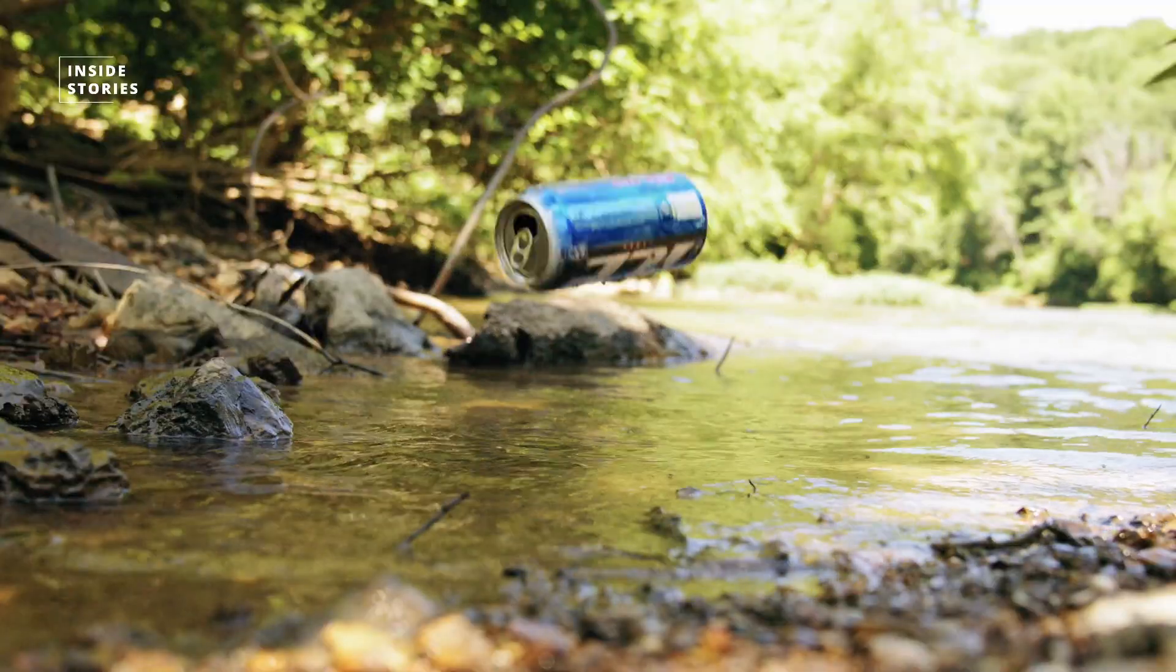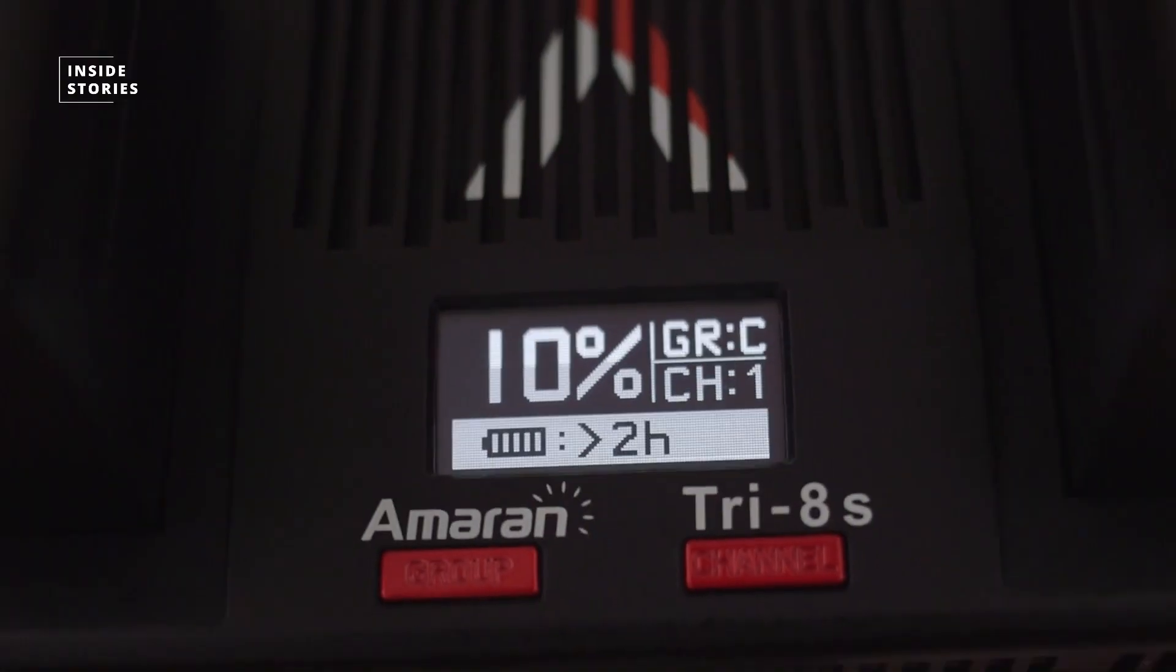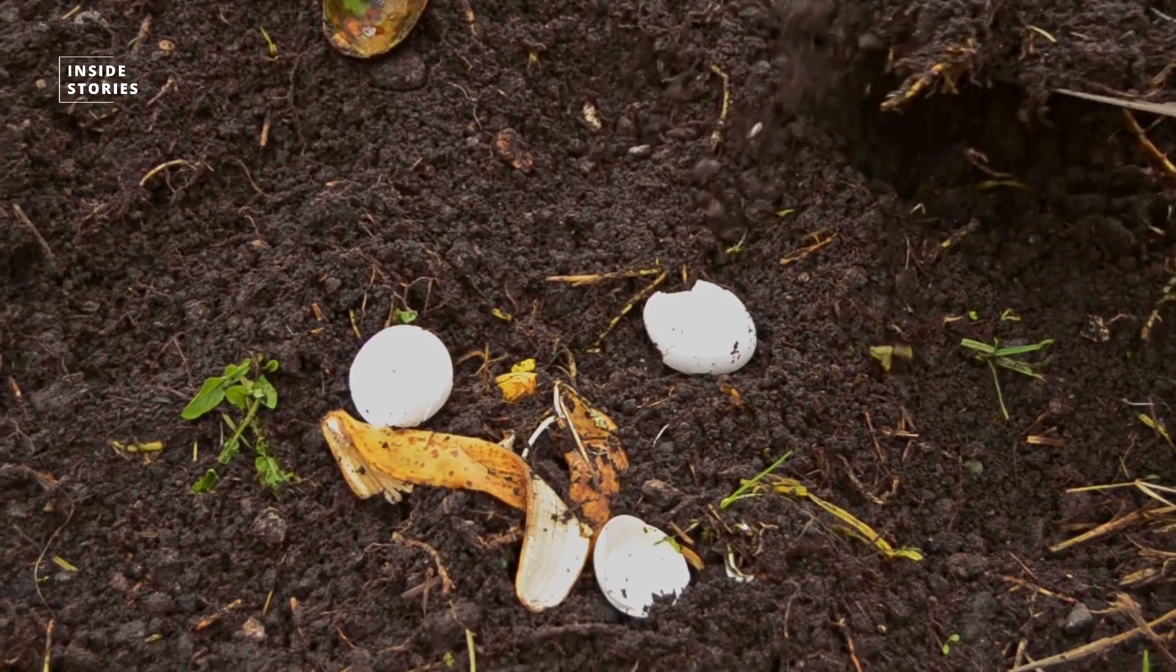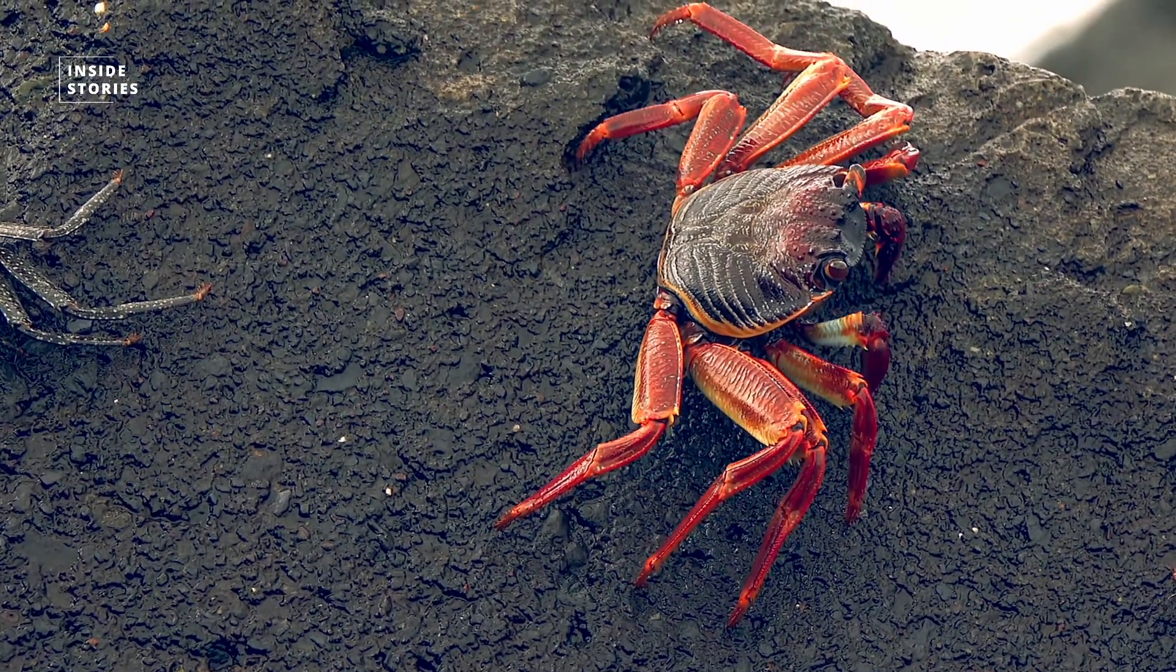But this all could now change, because a research team from the University of Maryland recently produced a rechargeable zinc battery with a biodegradable electrolyte from an unexpected source. These little guys here, or more specific, the chitin in their shells.